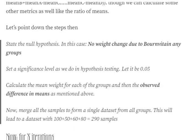In permutation testing, we first define a null hypothesis — similar to standard hypothesis testing — which states there is no change between the groups, basically no weight change due to Bon Vita in any of the groups.